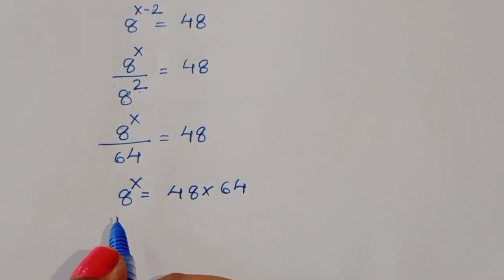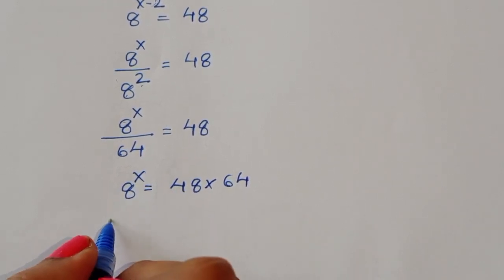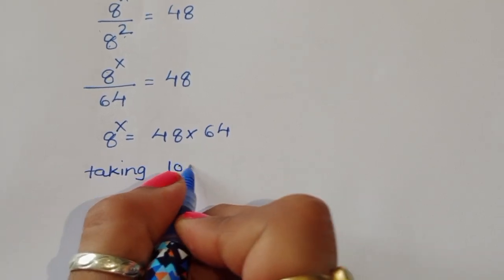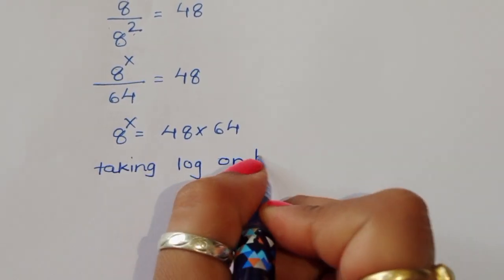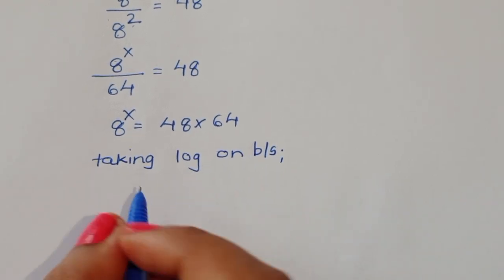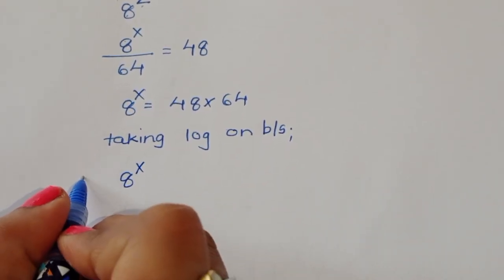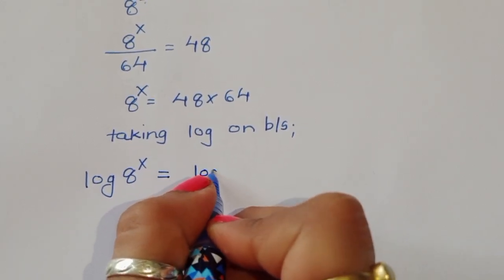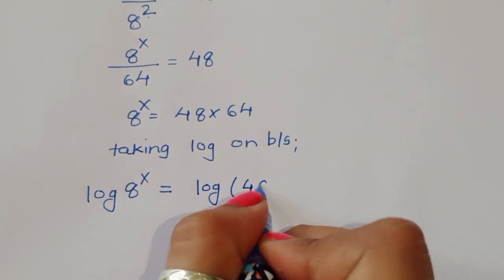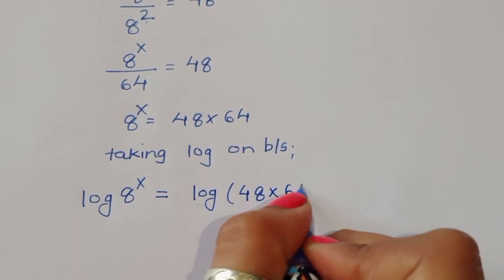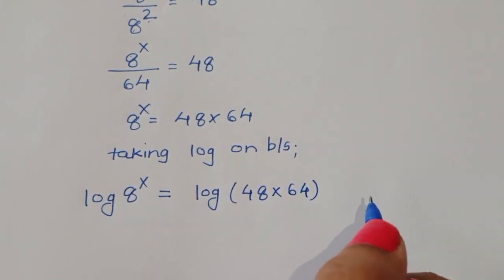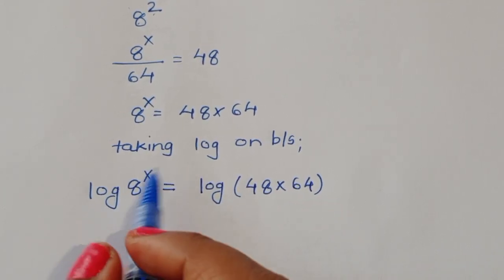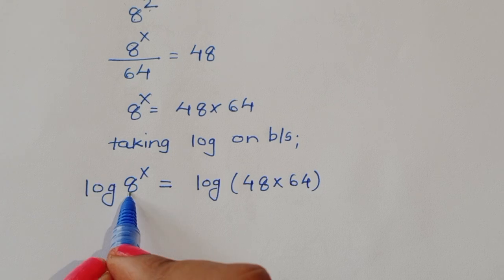Now we have to find the value of x, so we take log on both sides. We get log of 8 power x is equal to log of 48 times 64. Now we apply the formula: log of a power b is equal to b times log of a.